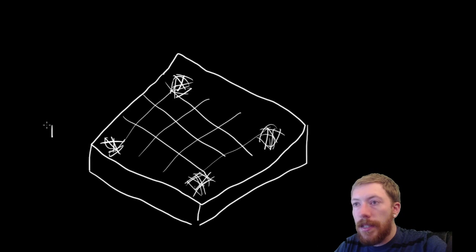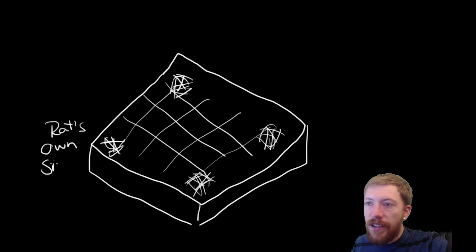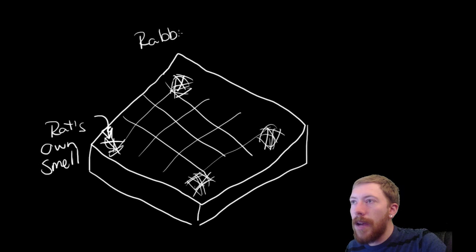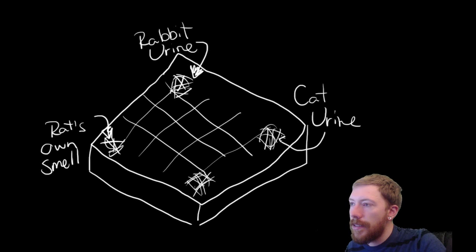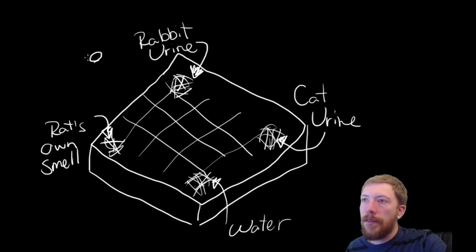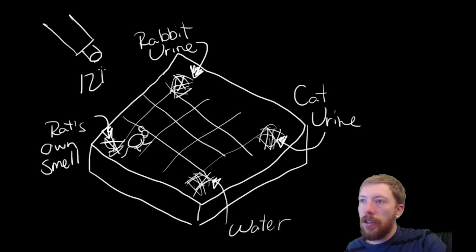And in each corner, they put straw. They put this straw bedding that the rats would use for a nest. And so, in one corner, it smells like, basically, the rat's own smell, the rat's own funk that they have in their bedding. In another corner, they use rabbit urine and they place that on untreated straw. In another corner, they put cat urine, and in a final corner, they just have straw with water. And then they hook up a camera above this little nest, and they record the rat's behavior inside of these, inside of this little contraption that they set up.